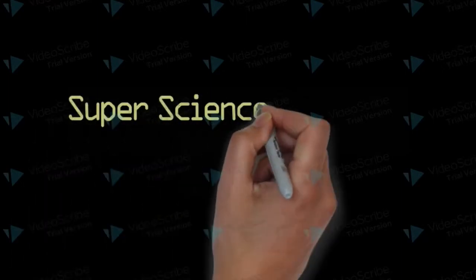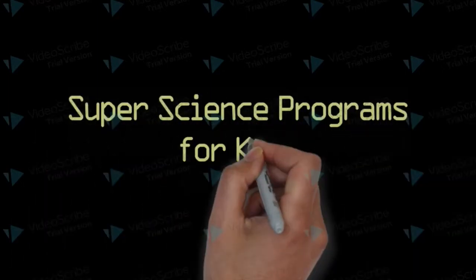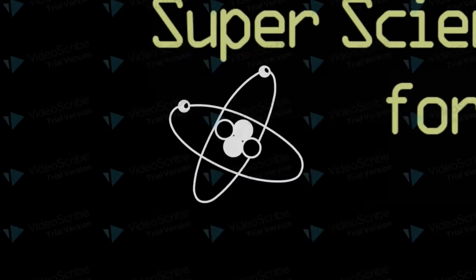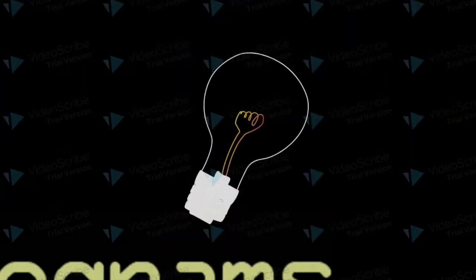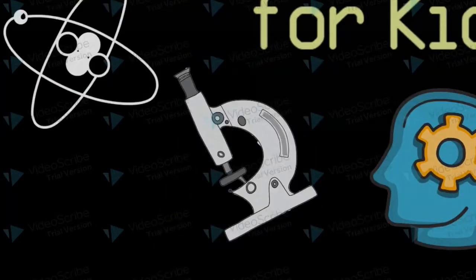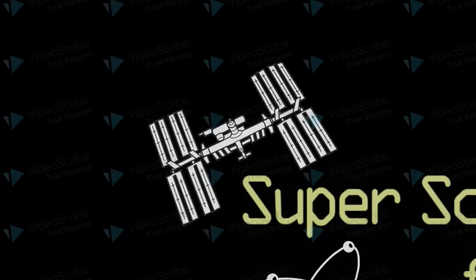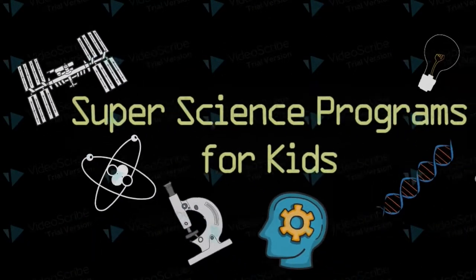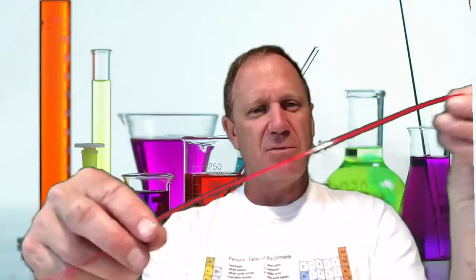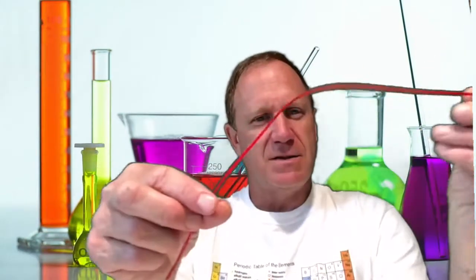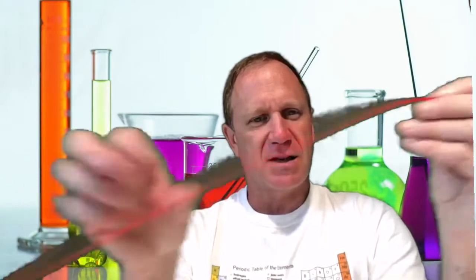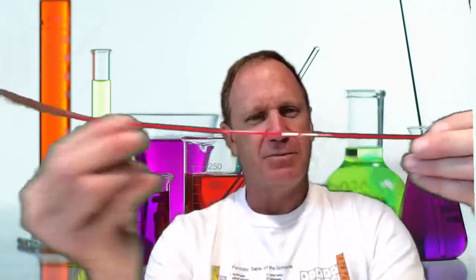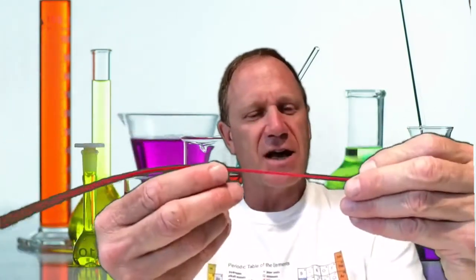All right, we're ready for our next experiment which is called talking tapes. In your box there is a baggie with a red tape that looks like this. It's a strip of plastic, and if you look at it carefully on both sides, one side you'll see is smooth and the other side has little lines on there.